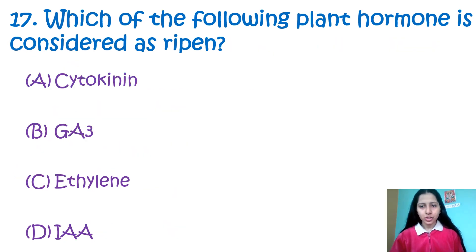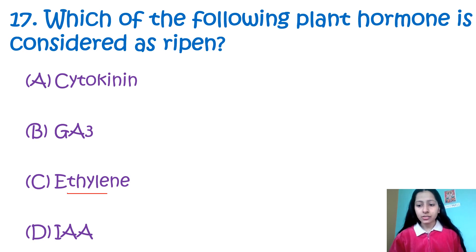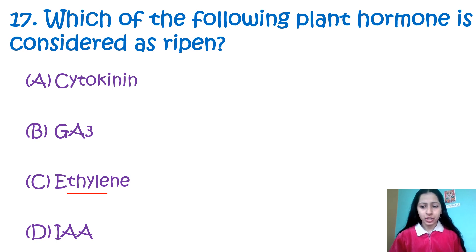Question number 17: Which of the following plant hormones is considered a ripening agent? Option A: cytokinins, Option B: GA3 (gibberellic acid), Option C: ethylene, Option D: IAA. Ethylene gas is also known as the ripening gas, which helps fruits to ripen as it enhances the respiration rate during ripening. Gibberellic acids act as plant growth regulators that modulate various physiological, biological and chemical molecular processes in plants, helping with germination, metabolism, yields and growth. My correct option is option number C — ethylene.